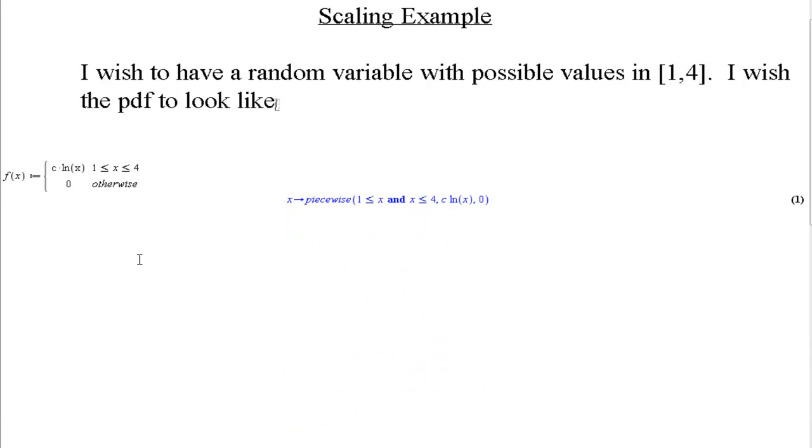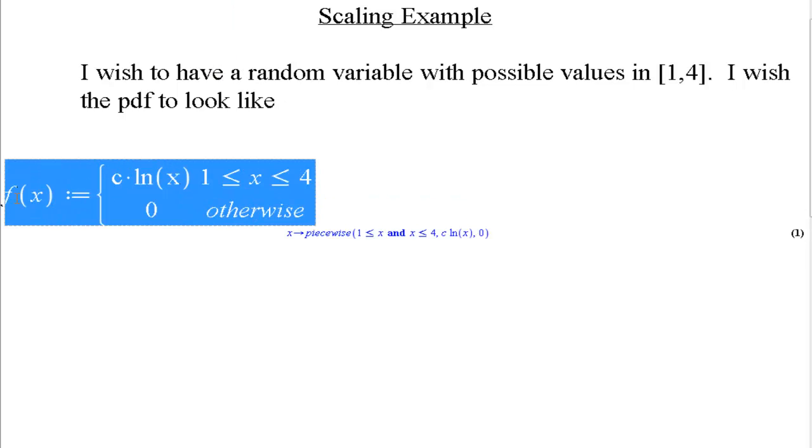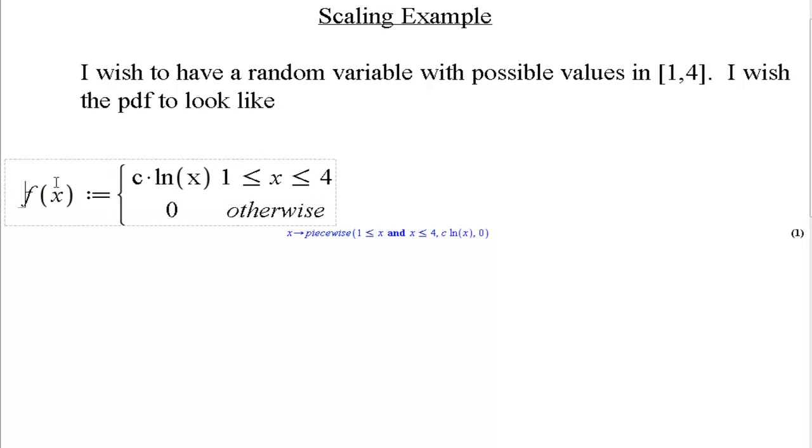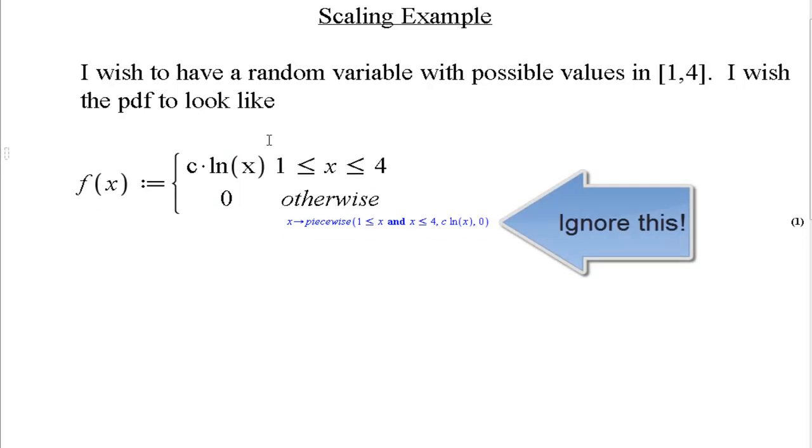I wish the PDF to look like this. I wish it to look like some constant c times the natural log of x. The possible values of x are going to be from 1 to 4, and the PDF will be 0 for any values outside of that interval from 1 to 4.